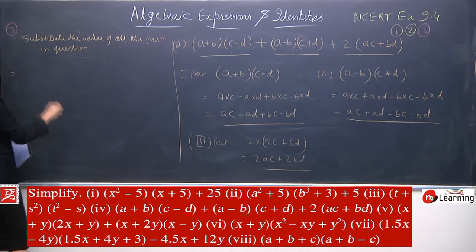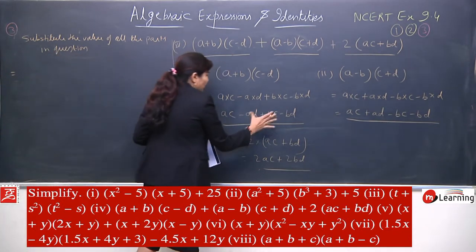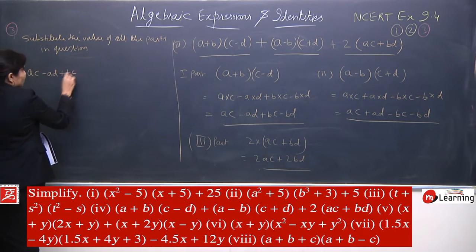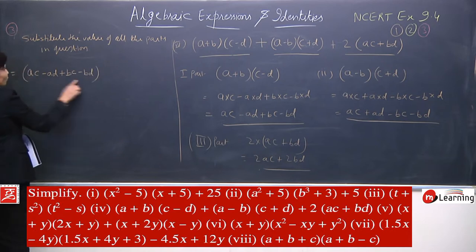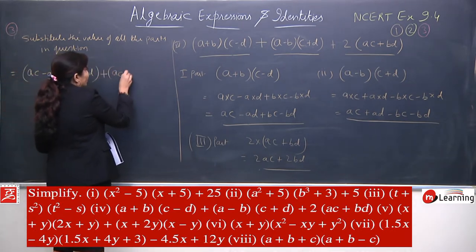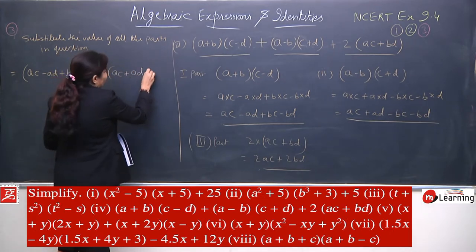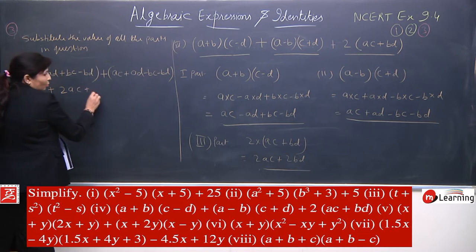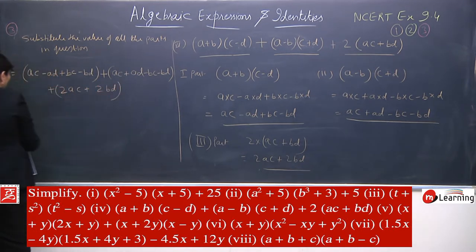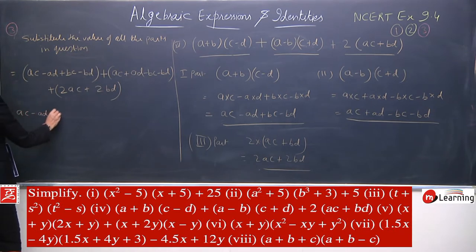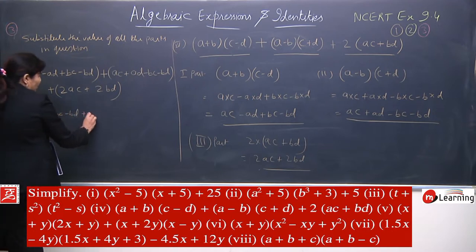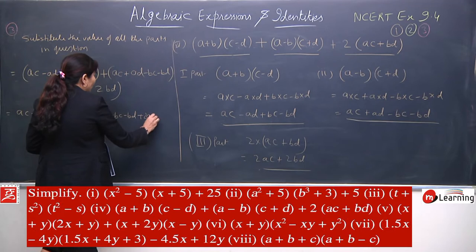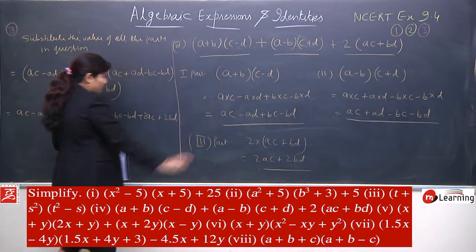Your question was in three parts. In place of each part we will put its value. So: ac minus ad plus bc minus bd — this is your first part — plus the second part: ac plus ad minus bc minus bd. And the third part is twice ac plus twice bd. We will open all brackets. Since it is plus, there is no tension — no sign change will happen.